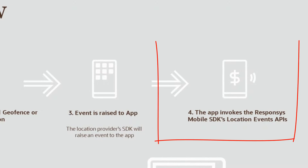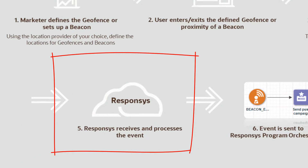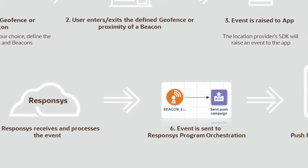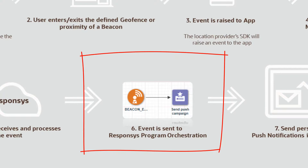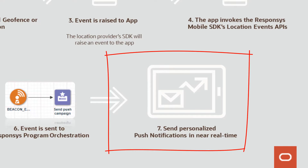The mobile app raises the corresponding Responsys geofence or beacon event API. The Responsys SDK will then send the event to Responsys. Responsys then receives and processes the event, which is sent to the Responsys program orchestration. Finally, marketer-defined push campaigns can be sent out to the user from the Responsys program orchestration.